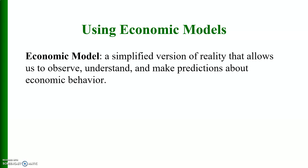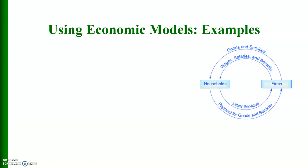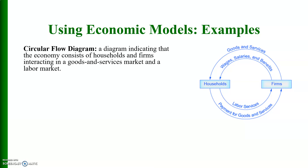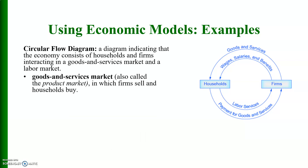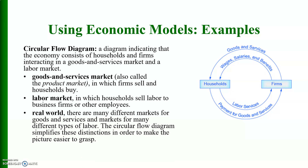An economic model is a simplified version of reality that allows us to observe, understand, and make predictions about economic behavior. Economic models can be represented using words, diagrams, or mathematics — algebra and graphs are commonly utilized. One example is the circular flow diagram, which depicts a two-sector economy of firms and households, showing how transactions take place across the goods and services market and the labor market. The circular flow diagram simplifies these distinctions to make the picture easier to understand.